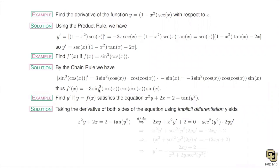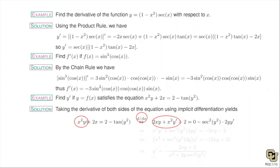To find y prime, we start with the equation. I really want to emphasize: this is an equation with a left-hand side and right-hand side, and we have to always be aware of both sides. What I need to do is take an x derivative of both sides. For x squared times y — since y is a function of x, this is a product of functions of x — we use product rule. The derivative of x squared is 2x times y, plus x squared times dy/dx.